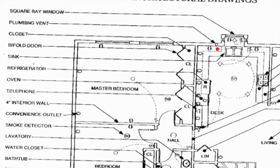Plumbing vent — inside the wall, if you have a little circle like this one, that represents a plumbing vent. That allows gases in the plumbing system to escape so they don't build up and come up through the toilet.